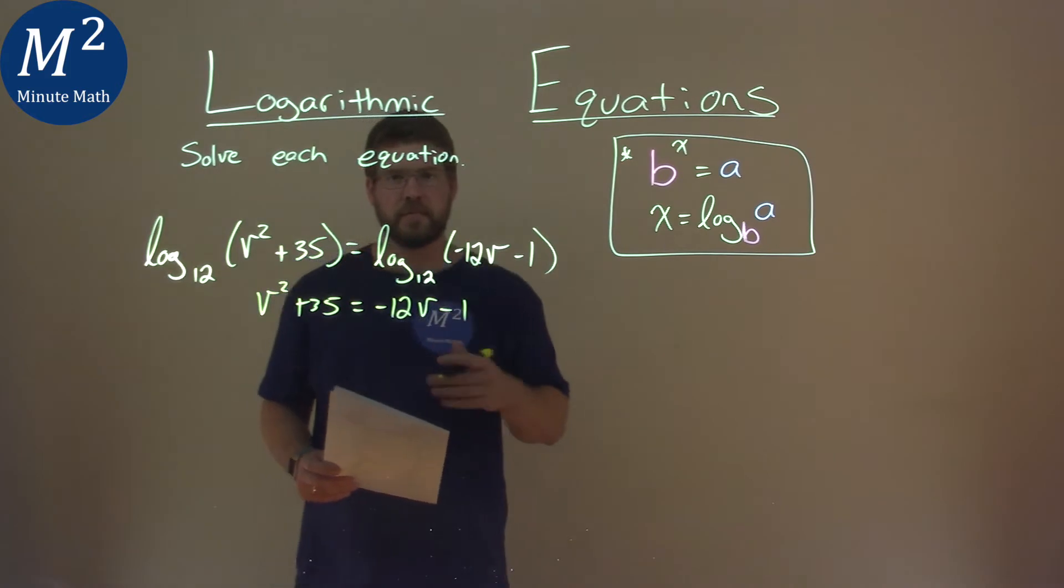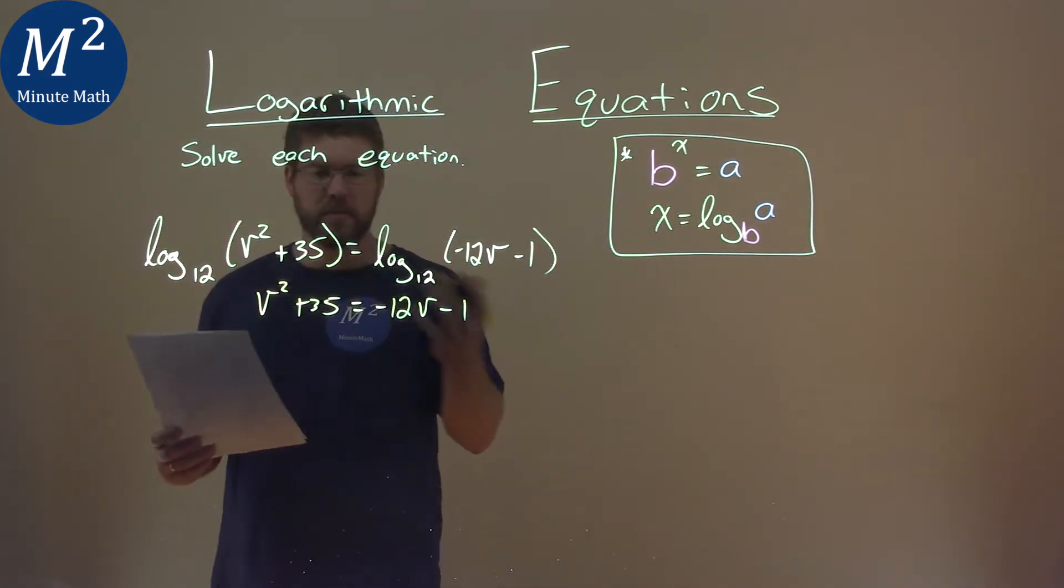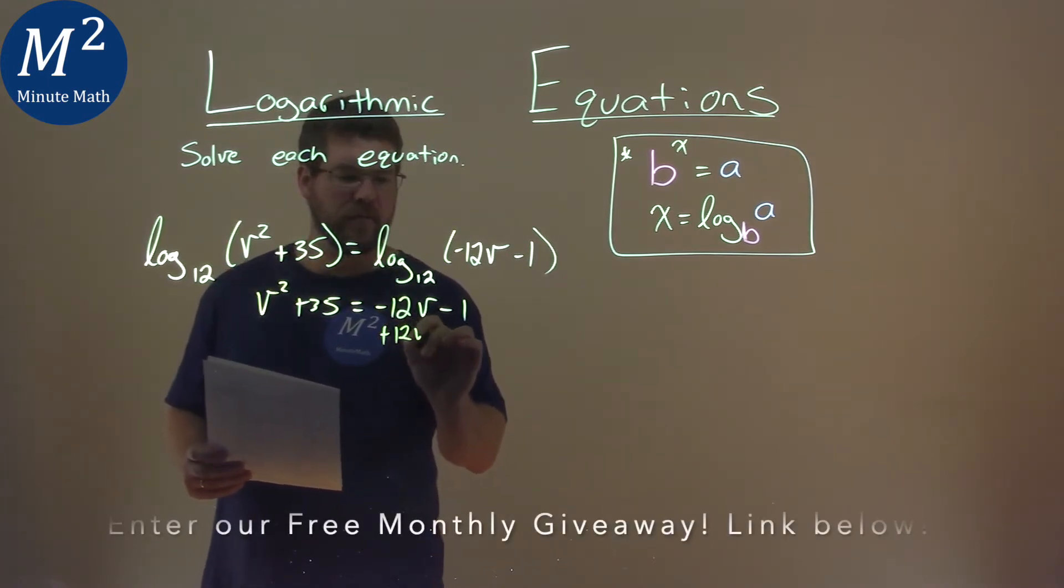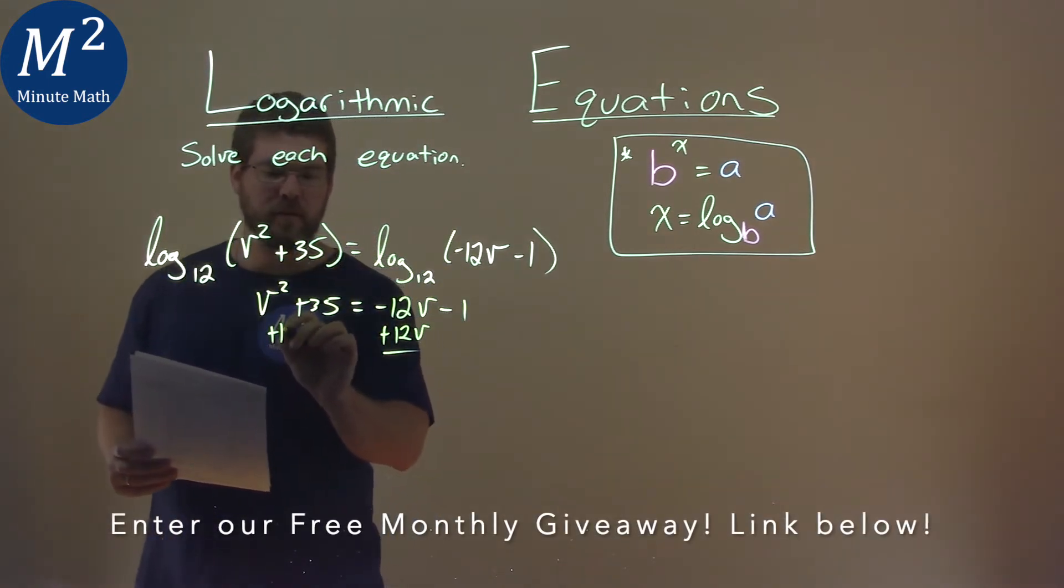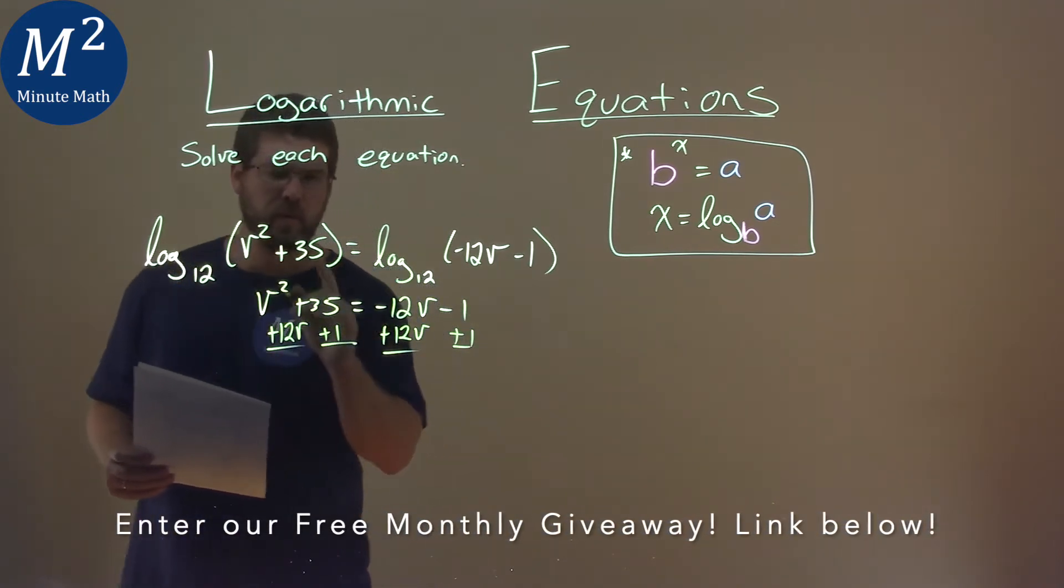Now I want to solve this equation. I want to bring all my like terms to the left-hand side, or all the terms to the left-hand side to solve this. I'm going to add 12v to both sides, put it right here, 12v, and then add 1 as well. What do we get?